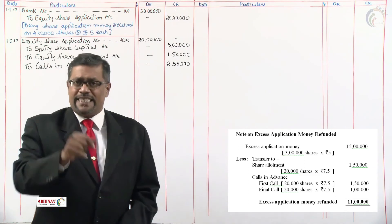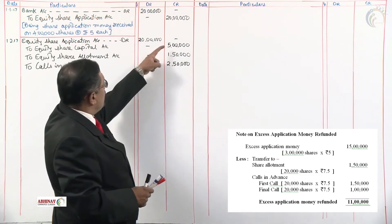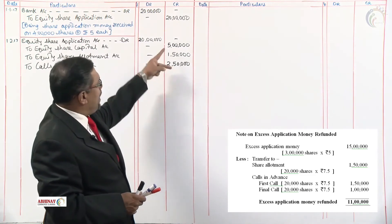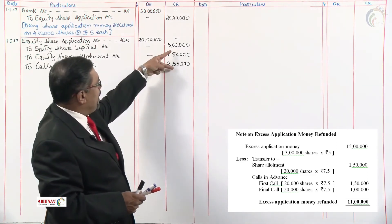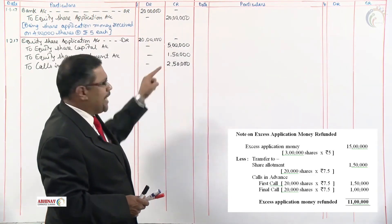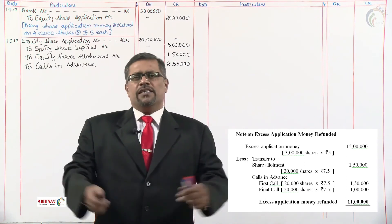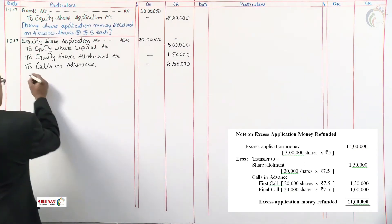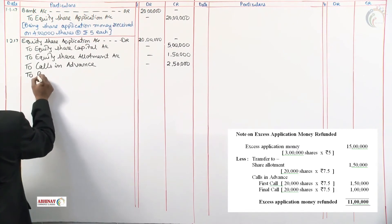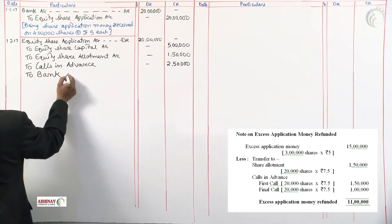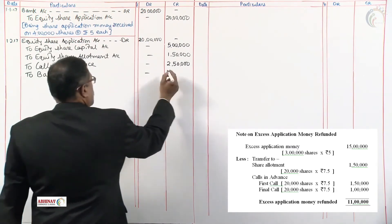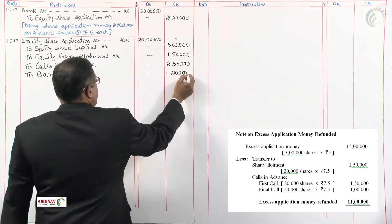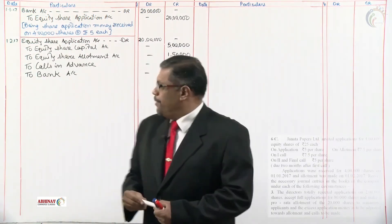Let us verify: 5 lakh plus 1 lakh 50 plus 2 lakh 50 equals 9 lakhs adjusted out of 20 lakhs received. Therefore, the money to be refunded is 11 lakhs — credited to bank account rupees 11 lakhs.